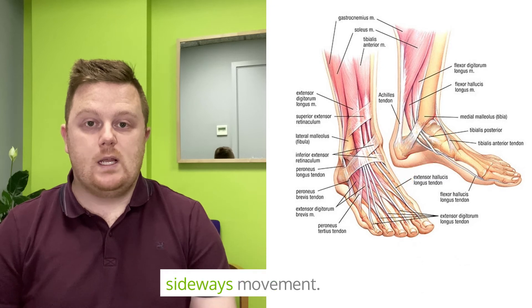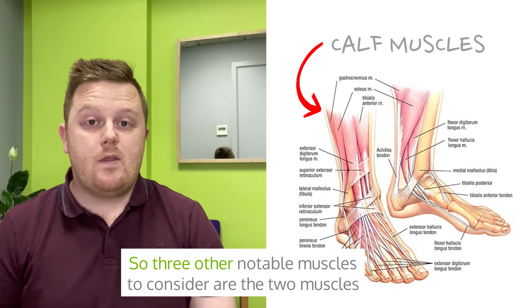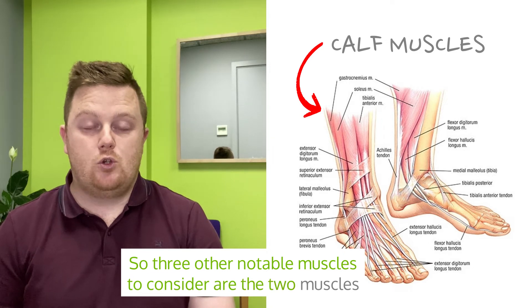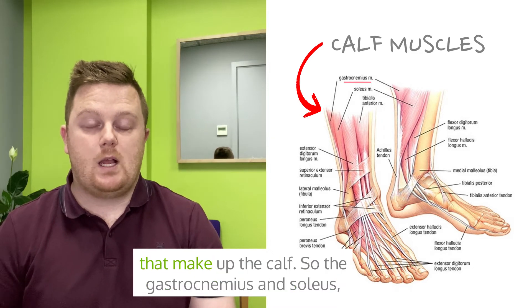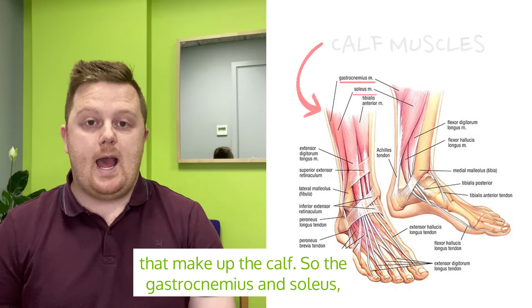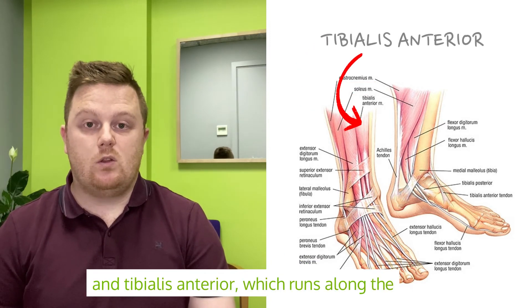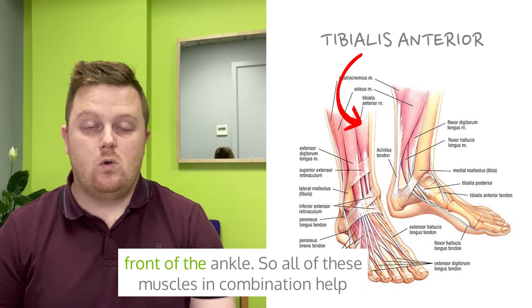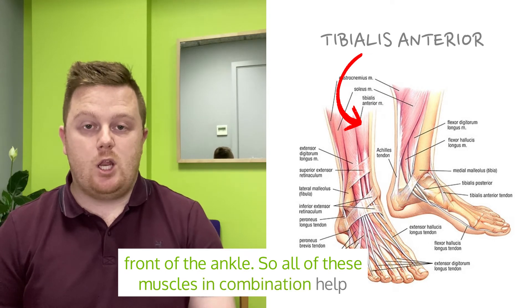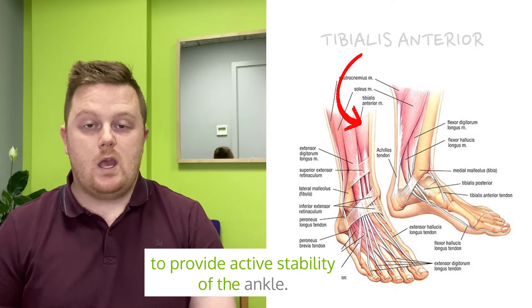Three other notable muscles to consider are the two muscles that make up the calf — the gastrocnemius and soleus — and tibialis anterior, which runs along the front of the ankle. All of these muscles in combination help to provide active stability of the ankle.